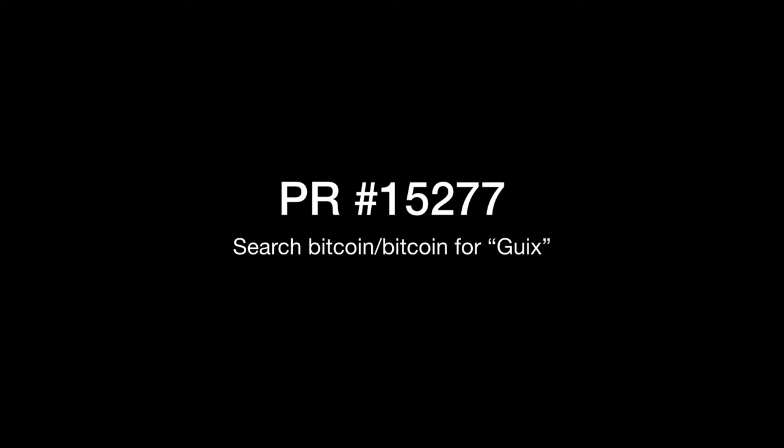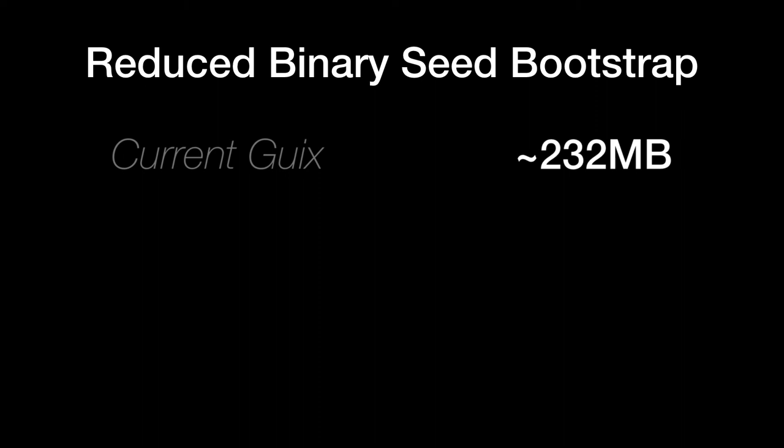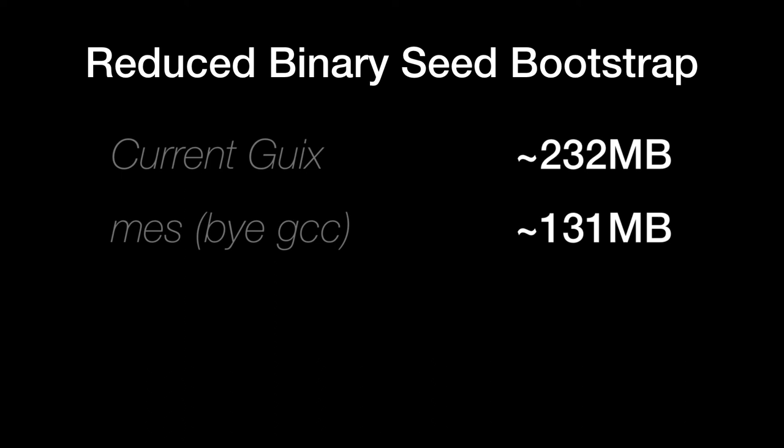There's one last thing I want to talk about: the ongoing work to enable a reduced binary seed bootstrapping of Guix, led by Janika. Currently, Guix's set of bootstrap binaries weighs in at 232 megabytes, which is already a fraction of that of Debian-based distros. With Janika's current version of MESS, which is already working in Guix's core-updates branch, we can eliminate GCC as a trusted binary, mitigating the trusting trust attack and bring our number down to 131 megabytes. Janika's work has been recently funded by NLNet, and will go on to eliminate Core Utils, Guile, and eventually itself with a C-subset transpiler.